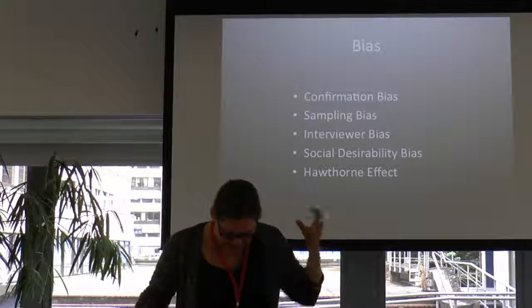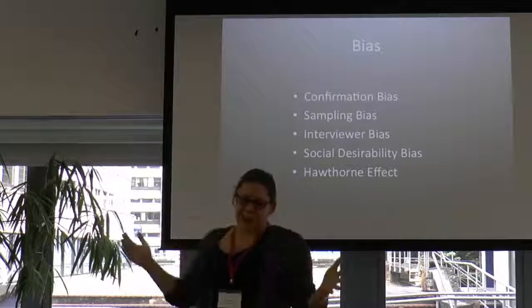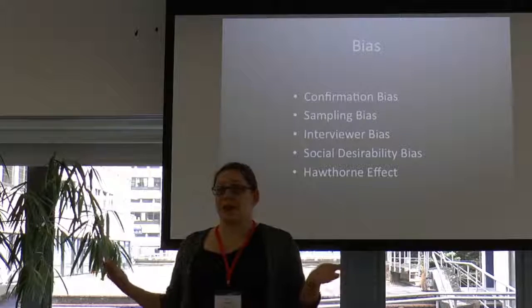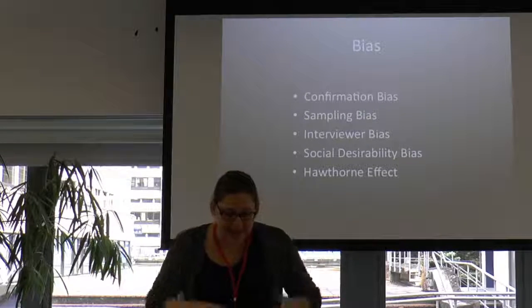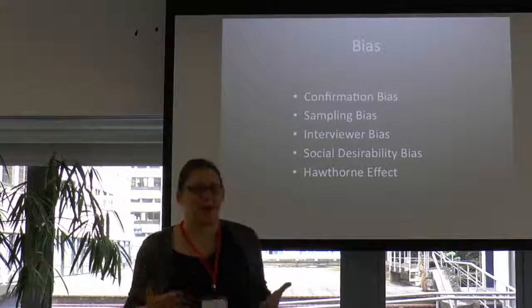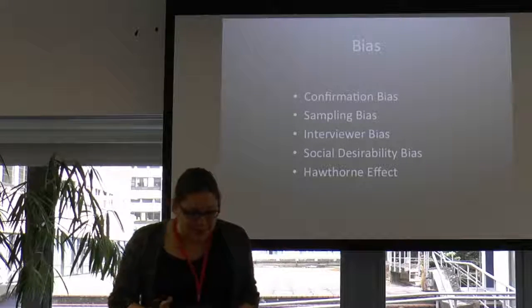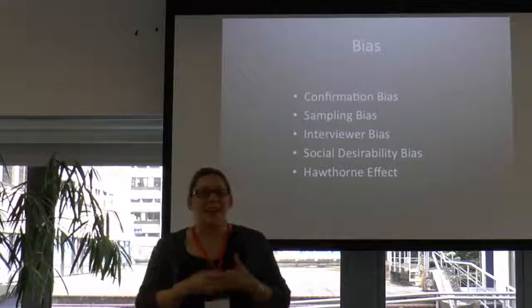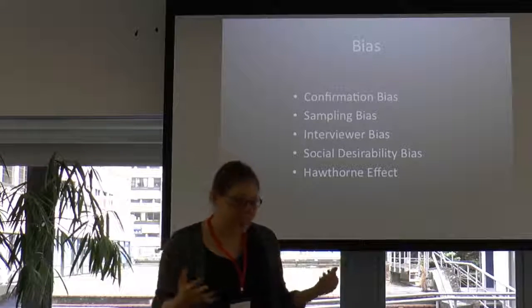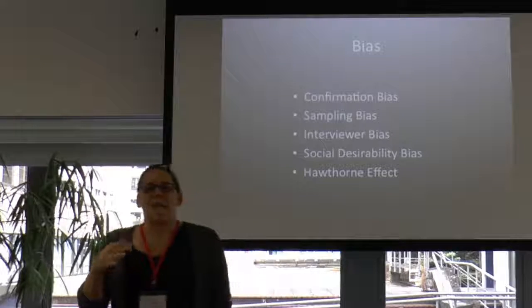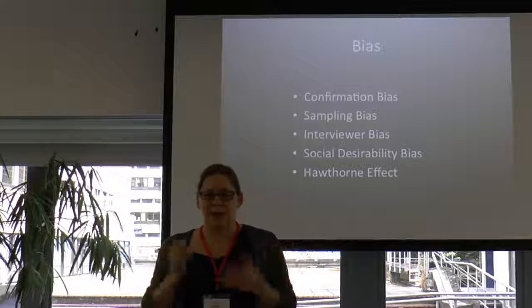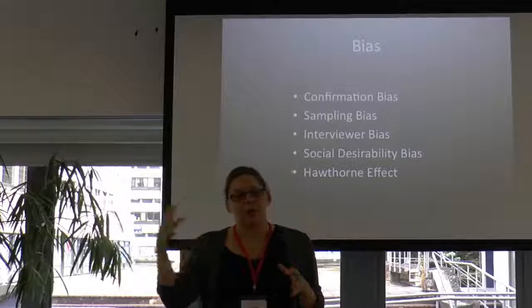I'll talk about a few different types of bias — these are not all of them, but some of the big ones. The first is confirmation bias: the tendency to reaffirm your own values and beliefs and to create research methods that confirm what you already believe to be true. For instance, I want evidence that my workshops are fantastic, so I set up questions that tell me my workshops are wonderful. The challenge is you won't learn anything that way.